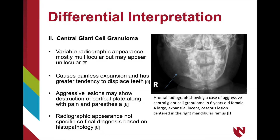The second differential to consider is central giant cell granuloma. These tend to have a variable radiographic appearance, but tend to be multilocular, although unilocular lesions can also appear. Central giant cell granulomas cause expansion and have a greater tendency than simple bone cysts to cause tooth displacement. These lesions may be aggressive or non-aggressive, with aggressive lesions showing destruction of the cortical plate along with pain and paresthesia. Since the radiographic appearance is not specific, final diagnosis is based on histopathology. The example shown displays a multilocular lesion causing tooth displacement and expansion, characteristics commonly associated with the aggressive form.